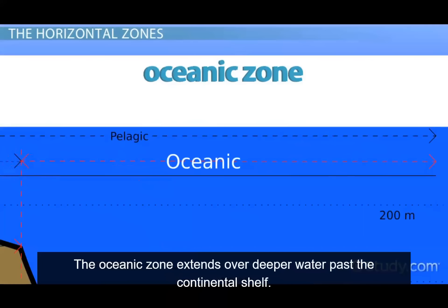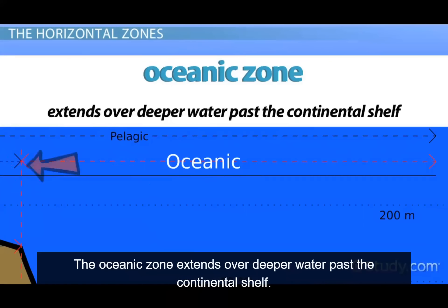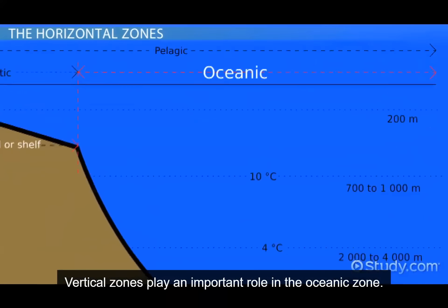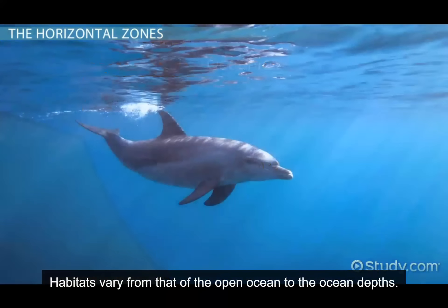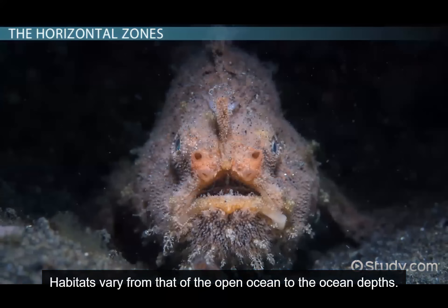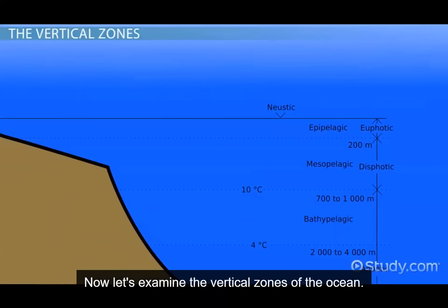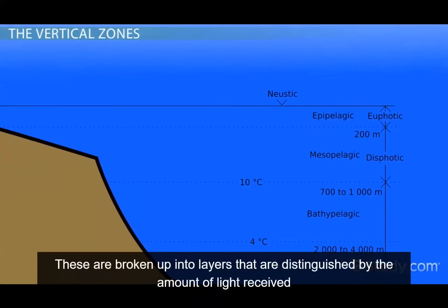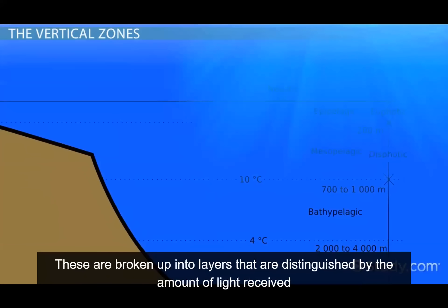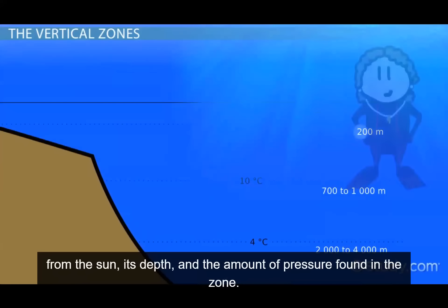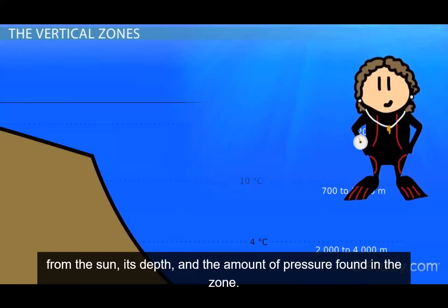The oceanic zone extends over deeper water past the continental shelf. Vertical zones play an important role in the oceanic zone, and habitats vary from that of the open ocean to the ocean depths. Now let's examine the vertical zones of the ocean. These are broken up into layers that are distinguished by the amount of light received from the sun, depth, and the amount of pressure found in the zone.